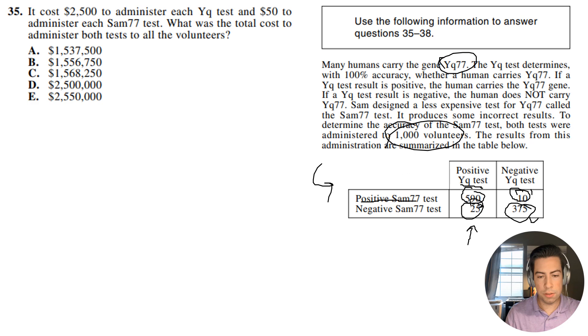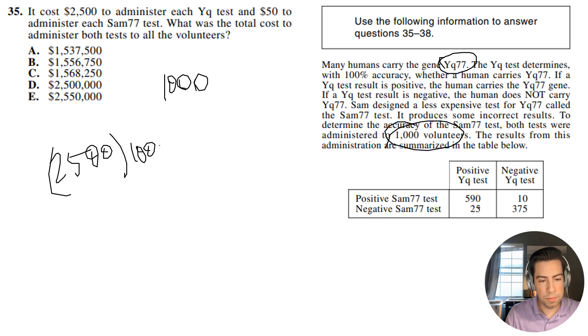Okay, so what we can do here is let's just answer the question. It costs $2,500 to administer each YQ test and $50 to administer each SAM77 test. So there's 1,000 volunteers, and we're giving them both tests. So it's going to be $2,500 times 1,000 plus 50 times 1,000. All right, so we are going to get E.